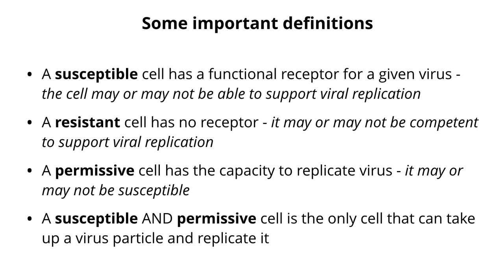Related to that is a resistant cell — a resistant cell doesn't have a receptor. It could be internally permissive for replication. For example, if you put the nucleic acid of the virus into the cell, which doesn't need a receptor, the nucleic acid may be able to initiate virus replication. So resistant only has to do with the presence or absence of a receptor.